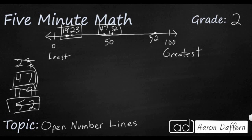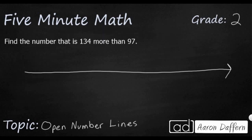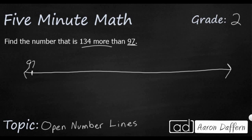Let's look at how we can use open number lines to solve other types of problems. Open number lines can also be used for addition and subtraction problems. Right here we have a simple problem: find a number that is 134 more than 97. So I'm going to start with my 97, take jumps forward, and use my place value knowledge — going by 100s, then 10s, then 1s.